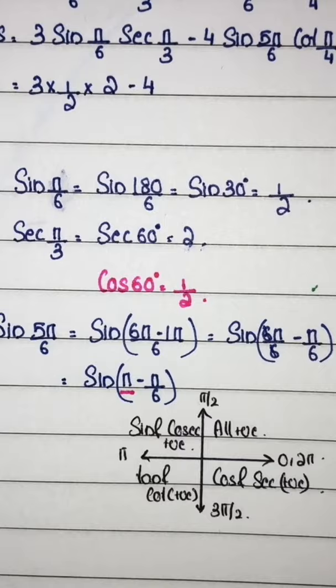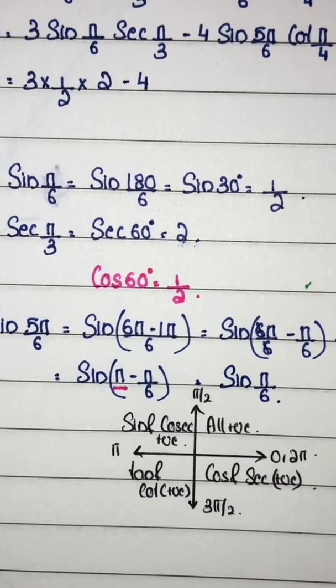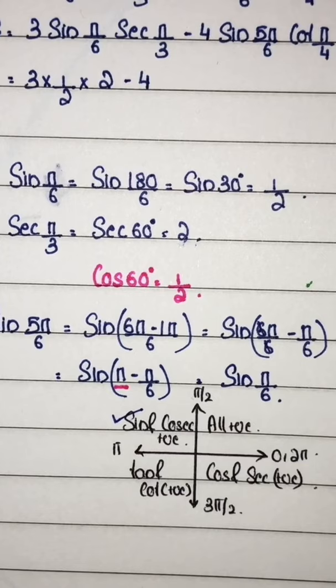Next, sin 5π by 6 equals π minus π by 6, which is less than π. So the angle lies in second quadrant, and in second quadrant sin is positive. So sin positive, π by 6.